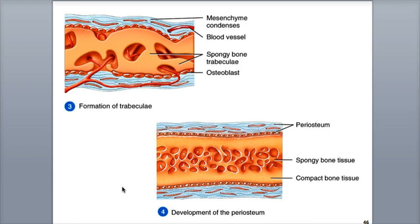In the fourth step, the development of the periosteum: as the trabeculae form, the outer mesenchymal cells become more concentrated and eventually develop into the periosteum. The central region of the new bone remains as spongy bone, while the surface layers of the spongy bone are transformed into compact bone. This new bone will undergo lots of remodeling over time as it is molded into its specific adult shape and size.